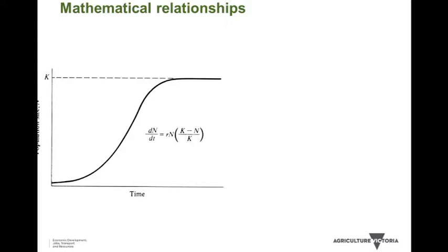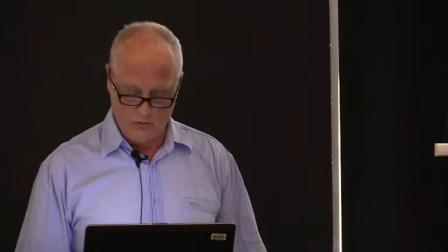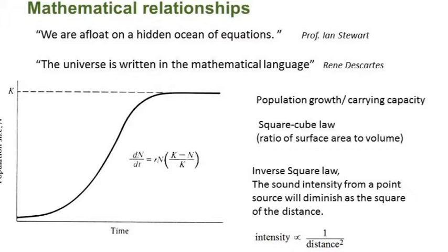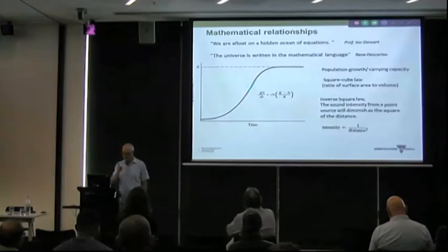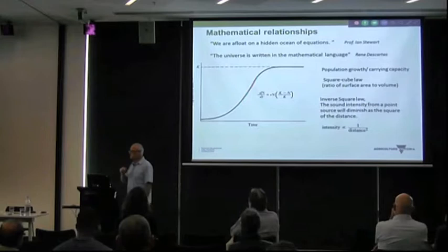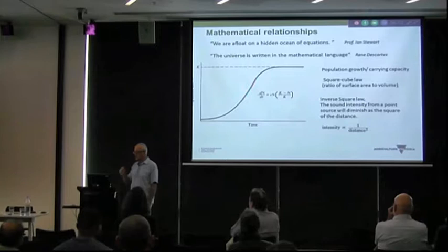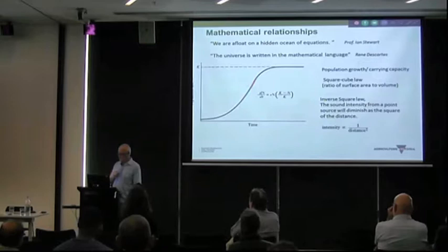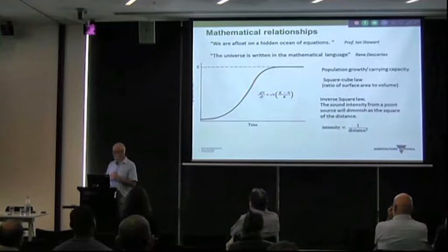Essentially, everything that we do in biology has a mathematical background or relationship. We're all afloat in a hidden ocean of equations — think about Brian Cox's voice. We can have mathematical relations that predict or model what we could do. These include things from population growth, carrying capacity, square-cube law, ratio of surface area to volume, and the inverse square law. The intensity of sound decreases at the square of the distance — useful knowledge for getting someone to come to you rather than you going to them.